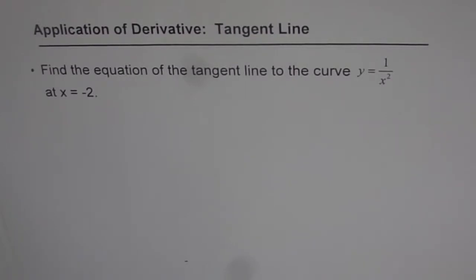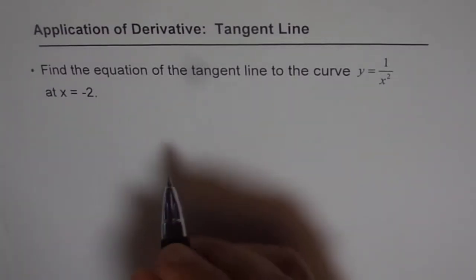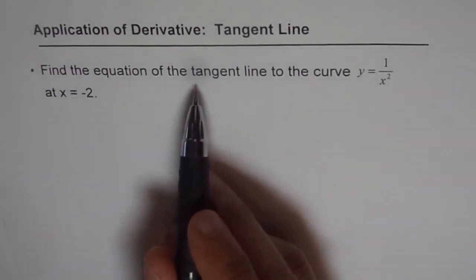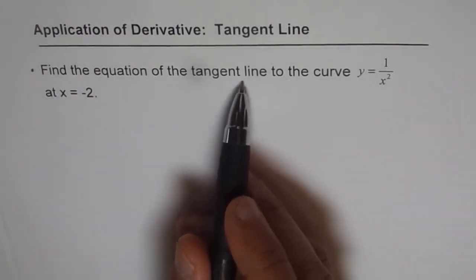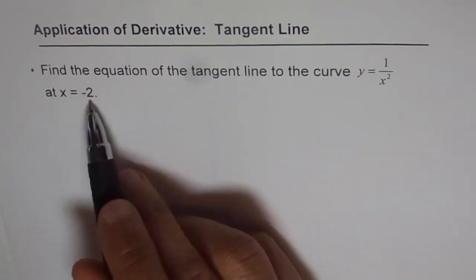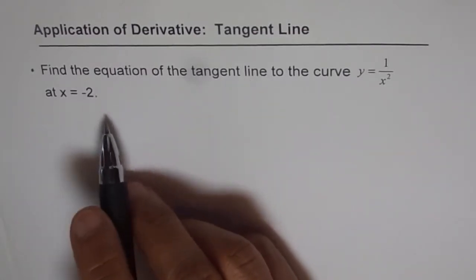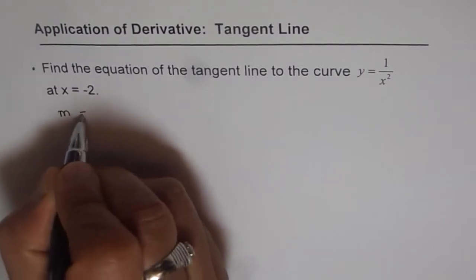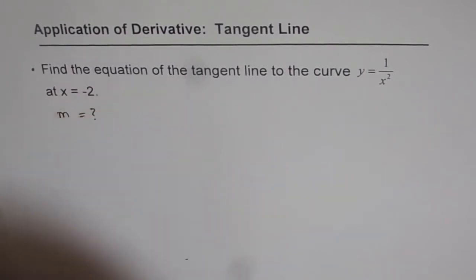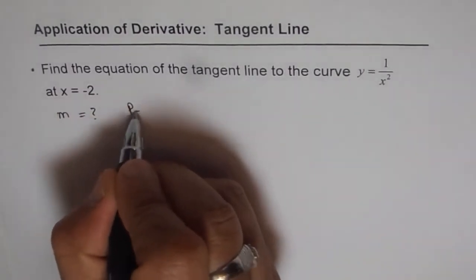This is the solution for the second problem from the first set of three. When you are trying to find the equation of a tangent line, you basically need two things: one, you need the slope at that point, and two, you need the point itself. So what we need here is the slope of the tangent line, let's call it m.